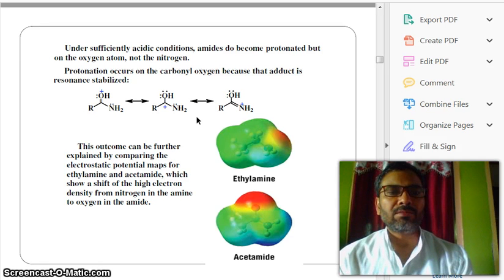This outcome can be further explained by comparing the electrostatic potential map. This figure is showing electrostatic potential map. Red is showing electron density, and here, green showing less electron density. For ethylamine and acetamide, which show a shift of high electron density from nitrogen in the amine to oxygen in the amide. So, this is ethylamine, and this is acetamide.